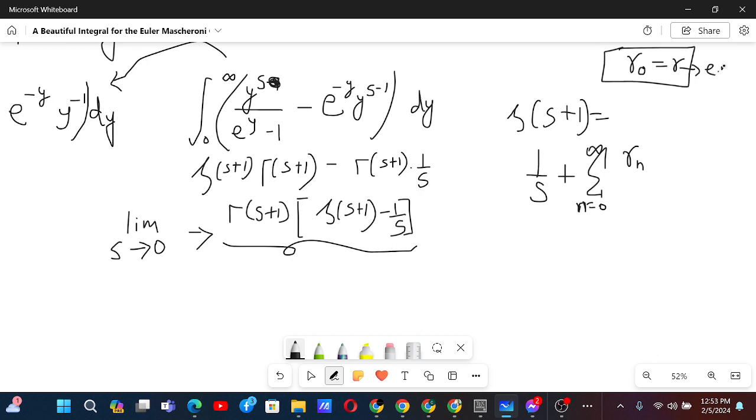And Stiltjes constant at n equals 0 will be Euler-Mascheroni constant. This one is Euler-Mascheroni constant. Stiltjes constant by n factorial times n. The value of the Stiltjes constant for different n's are different. And then we have minus s to the power n.